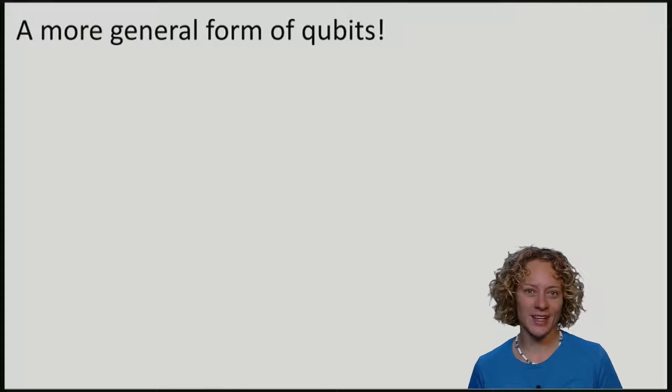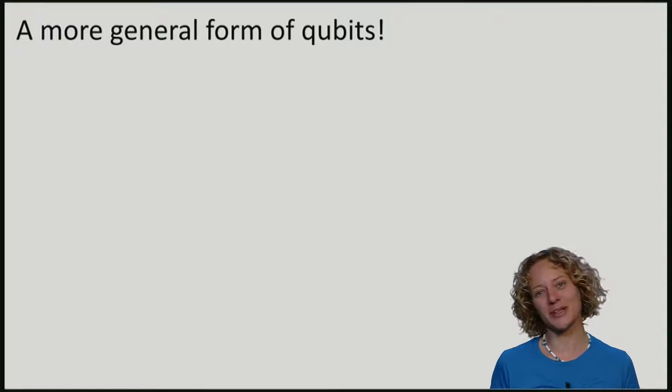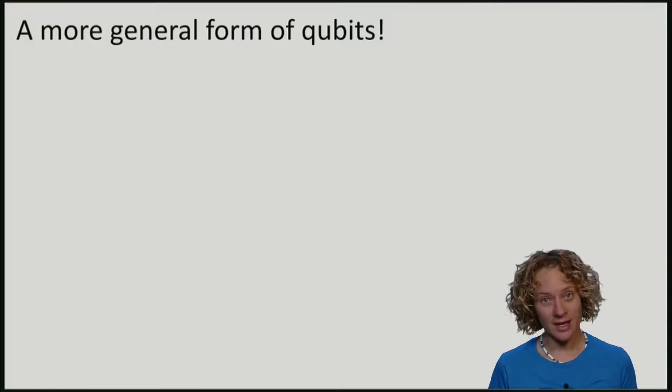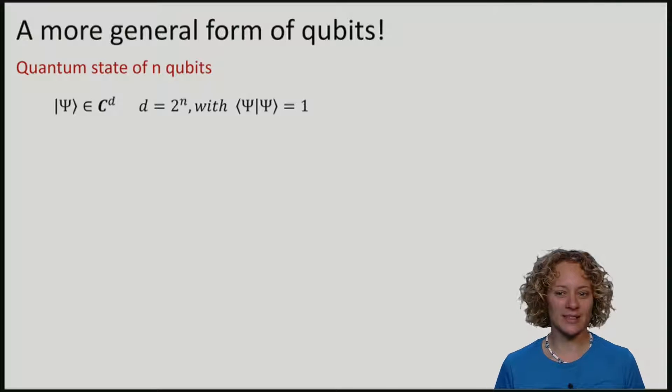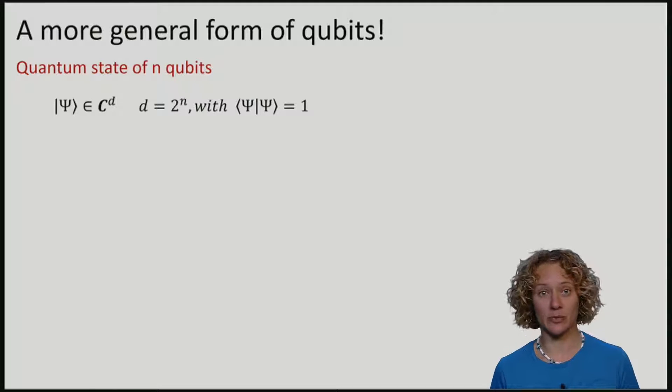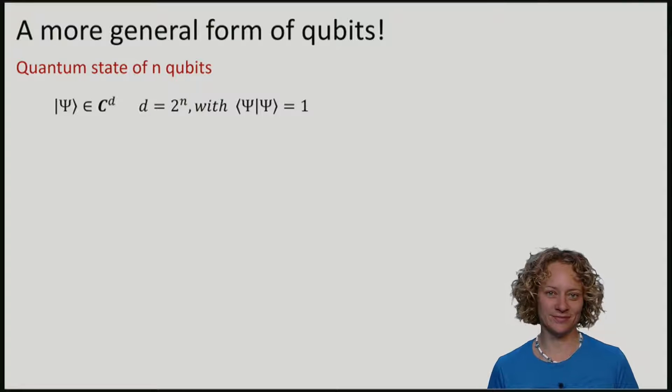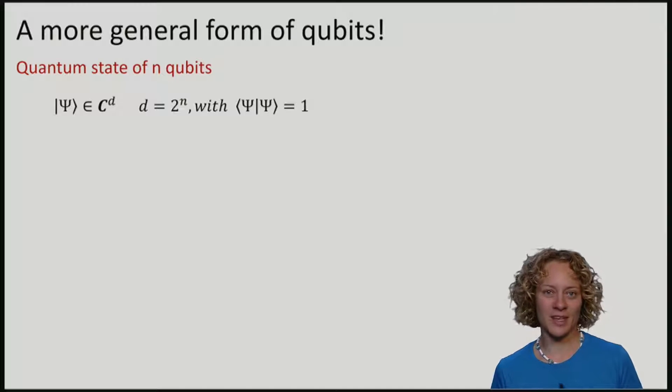I am going to assume here that you are familiar with what a qubit is. Mathematically, it is a vector in a complex space of dimension 2 to the n, where n is the number of qubits, and this vector has length 1. If you don't know about this yet, I encourage you to watch week 0, where we will teach you all about this mathematical description of qubits.